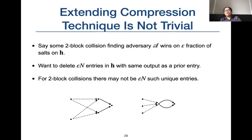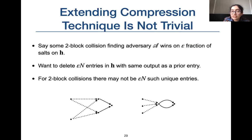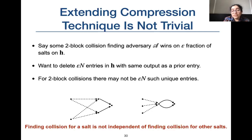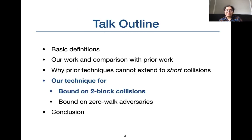However, this technique does not directly work for collisions in salted MD-based hash functions. If a two-block collision finding adversary wins on an ε fraction of salts, you want a compressor that deletes εn entries with repeated outputs. But for two-block collisions, there may not be εn such unique entries — queries with the same output can be part of collisions for more than one salt. The issue is that finding a collision for one salt is not independent of finding collisions for other salts.